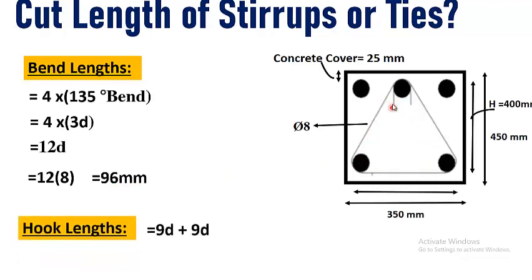And now there are two hook lengths. So one hook length is equal to 9D. So two hook lengths will be equal to 18D. By putting the value of D, that is diameter of a stirrup which is 8 mm, it will be equal to 144 mm.